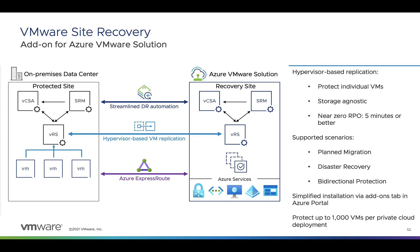We support the standard SRM scenarios. Planned migration allows VMs to be migrated to the cloud without data loss, with both sites running and fully operational — great for migrations. Disaster recovery orchestrates the recovery process so that if the protected site is offline, we can use the last known good replication of each VM to bring them up in the AVS environment with minimized data loss and downtime. We can also do bi-directional protection, where each site can be a protected and recovery site for a different set of VMs. One of the great things about SRM and AVS is the simplified installation: the deployment of SRM and vSphere replication appliances is fully automated within the Azure portal, cutting down on deployment time and getting you to protection quicker.